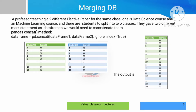Merging database is a data collection. Mostly we store data in table format. For example, a student marks statement — student ID, name, and marks are stored in table format.